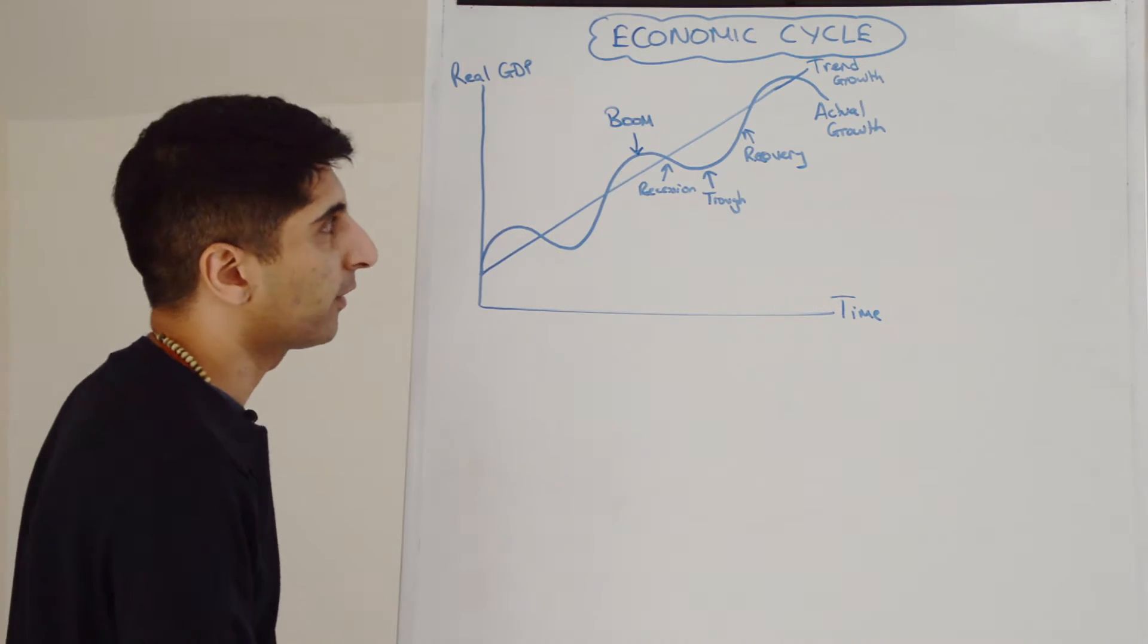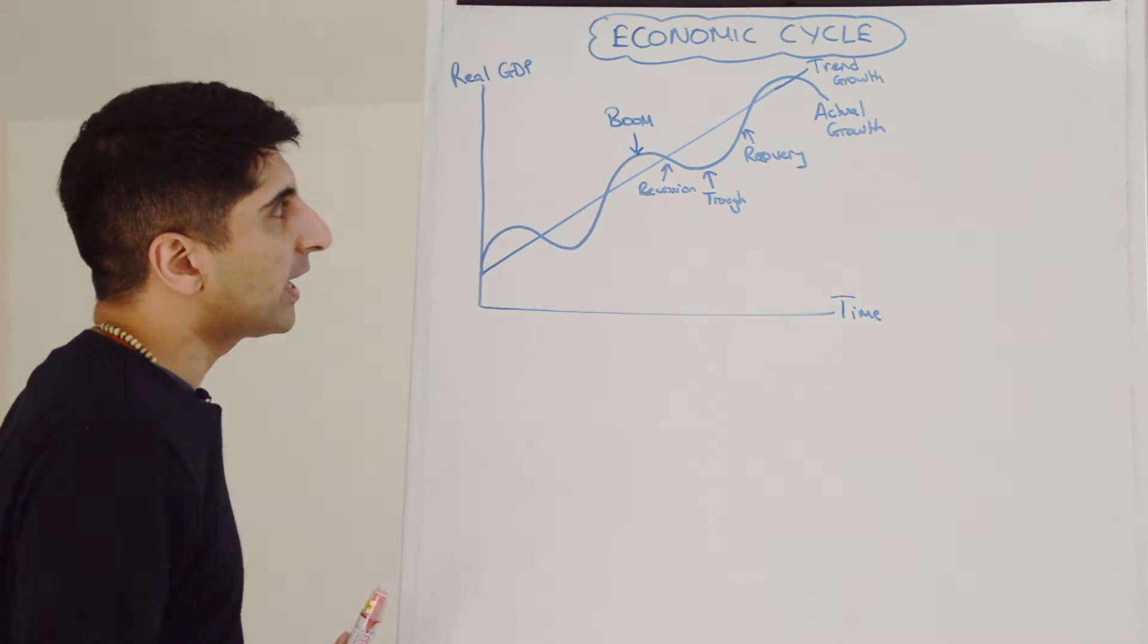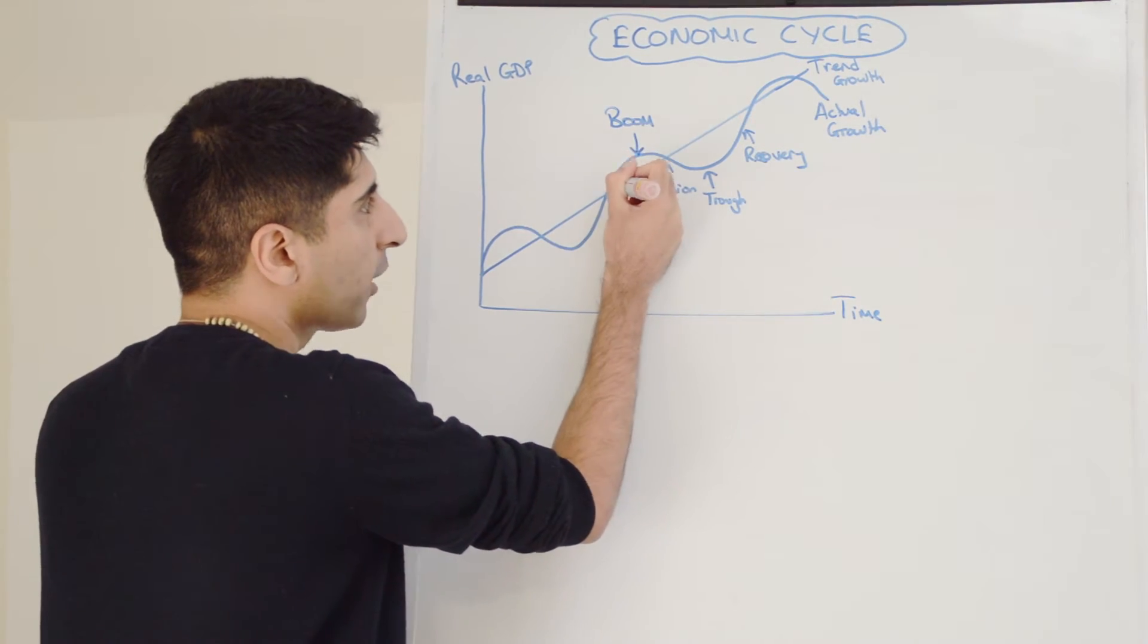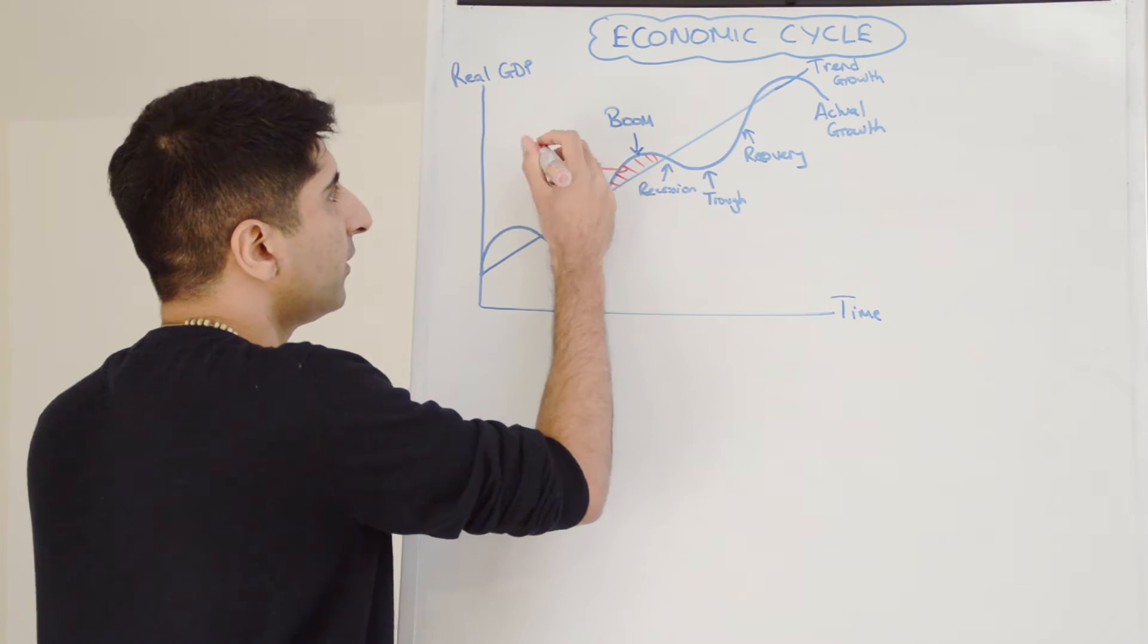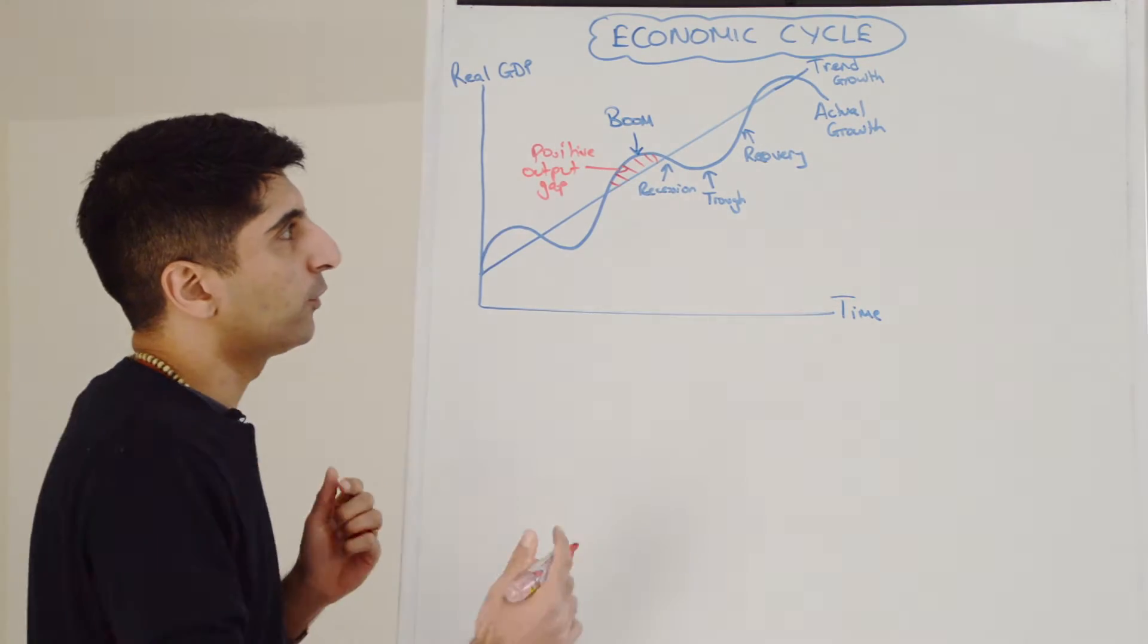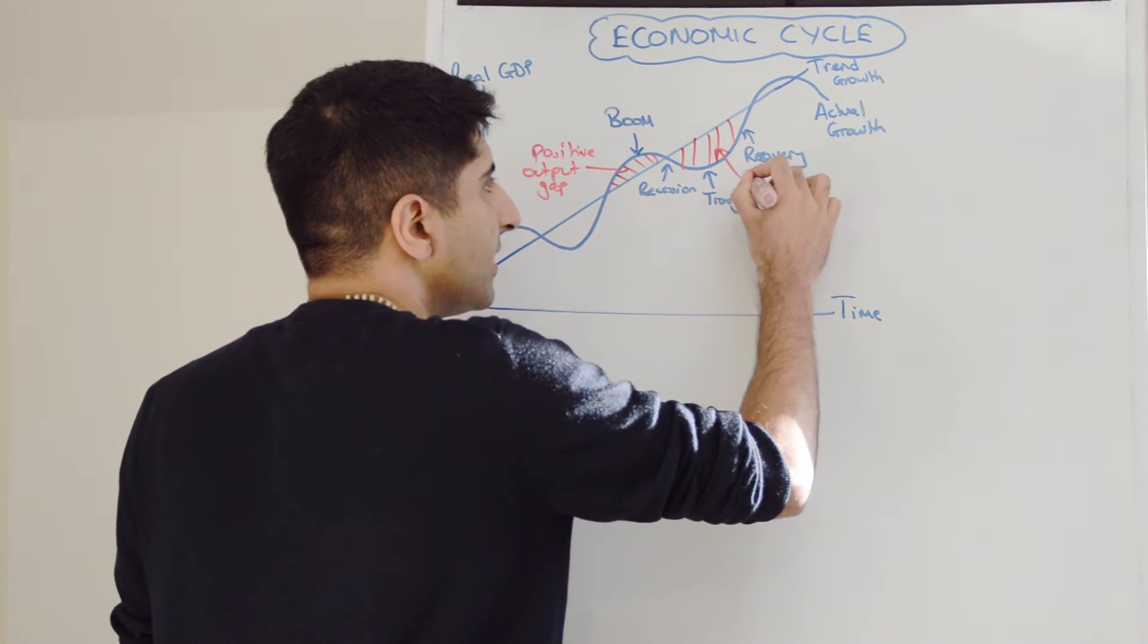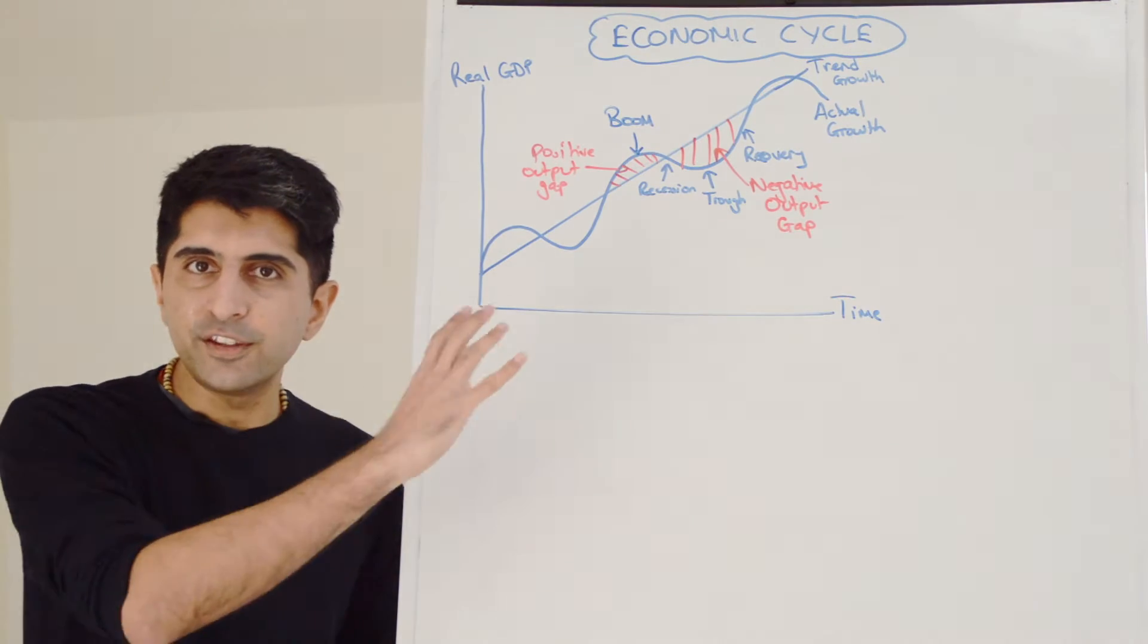What we can also show on this diagram is the concept of output gaps. We've learned output gaps already, and it's very clear to see them on this diagram. So when actual growth is greater than our potential growth, here for example, we have a positive output gap. And when actual growth is less than potential growth, for example this territory, we have a negative output gap. So now let's see what the different characteristics are of these various stages of the economic cycle.